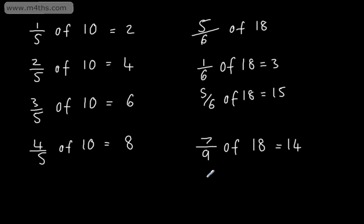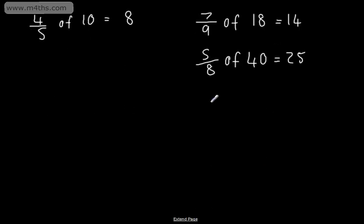Let's find, for example, 5 eighths of 40. 40 divided by 8 is 5. 5 times by 5 is going to give me 25. So, as we can see, this is relatively straightforward. We are dividing by the denominator and multiplying by the numerator.